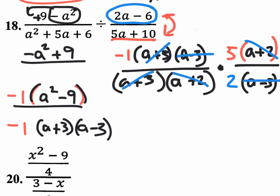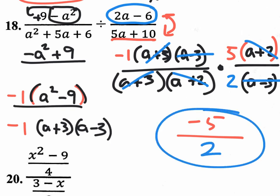So what do we really have left for number 18? What we really have left is negative 1 times 5 — well, that's negative 5 up on top. And on the bottom there's nothing here, there's only a 2. So your answer is negative 5 halves.